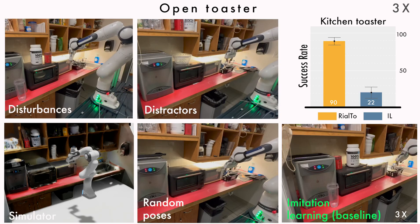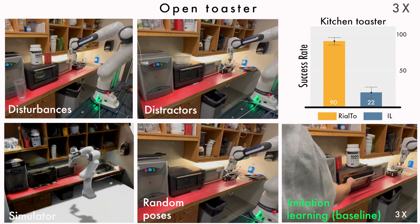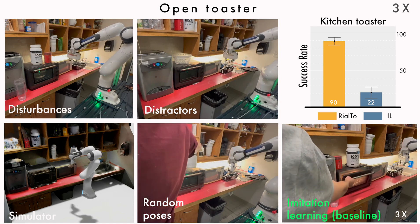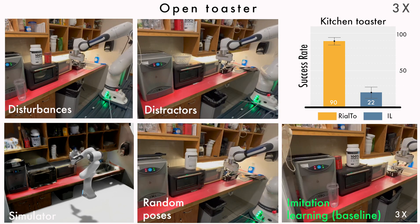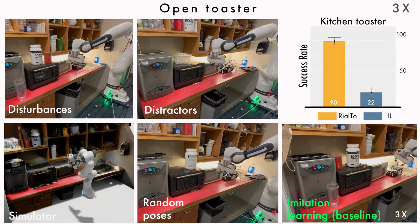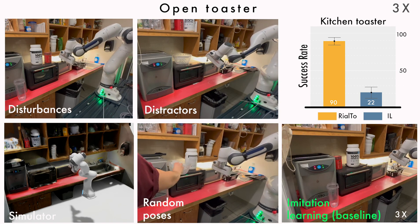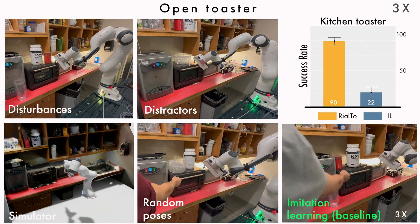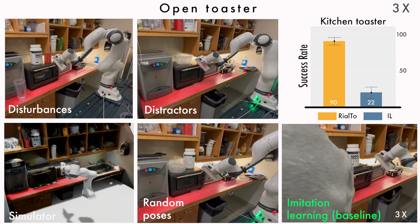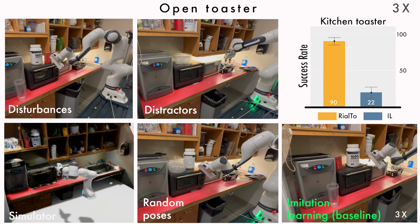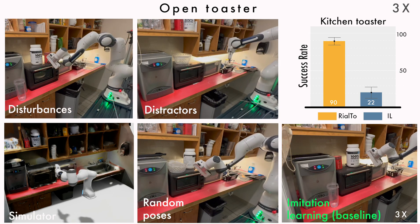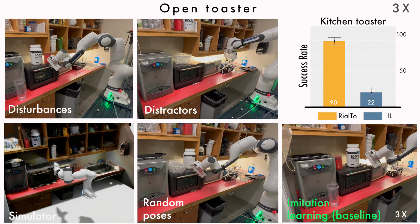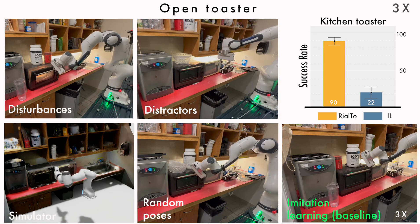Finally, we compare Rialto to standard imitation learning, and we show how Rialto drastically increases the robustness of imitation learning to different object poses, distractors, and disturbances.